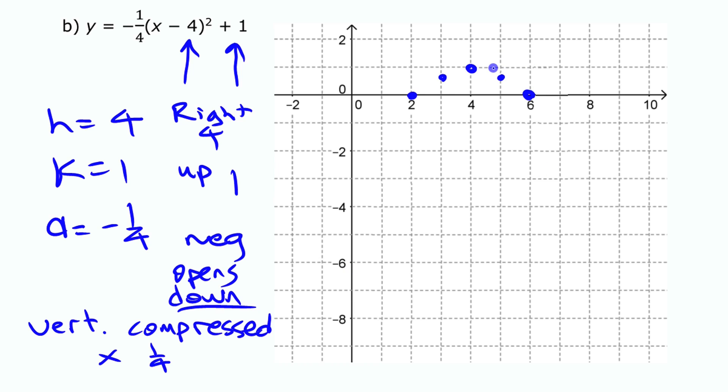And then we'll do, you could do 3. 3 squared is 9. And then a quarter of 9, you could try and figure out it's 2 and a quarter. You could put that point there if you want. Or again, you're going to be able to get the shape well enough just doing every other one, the ones that divide nicely by 4. So I'm going to do 4.